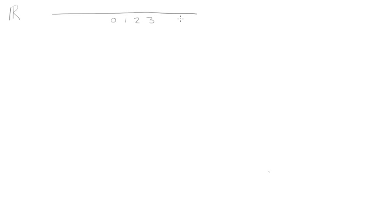So we have zero and then all the positive numbers — one, two, three — all the way up to infinity. And then we have all the negative numbers — negative one, two, three — all the way down to negative infinity. And then we have everything in between. So we could have one half, we could have negative 2.113, we could have pi. It's basically any number that you can think of.